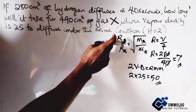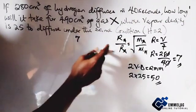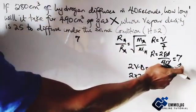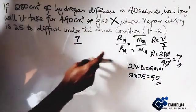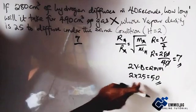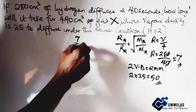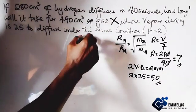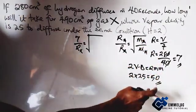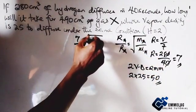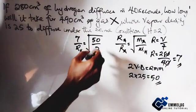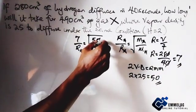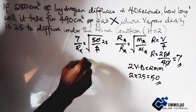So the relative molecular mass of X is 50. If we have to put it here we now have that 7 which is the rate of diffusion of hydrogen over R of X we don't know, then equals to for X here is 50 the mass